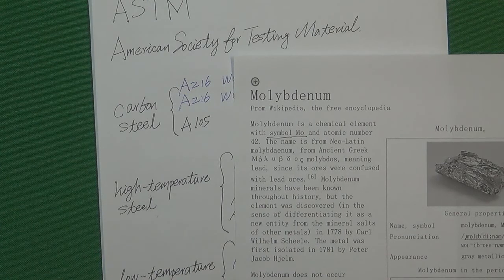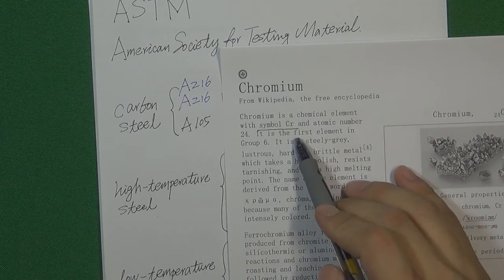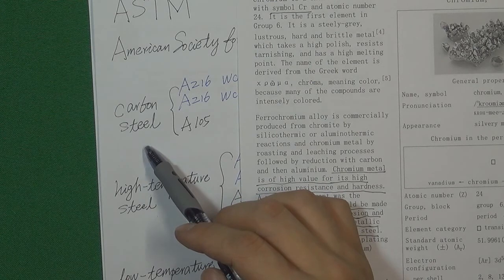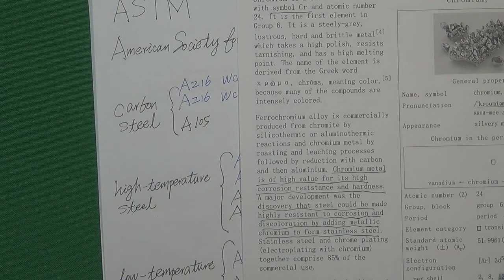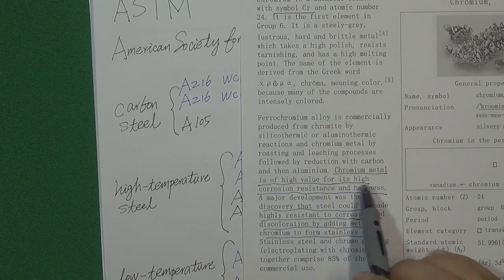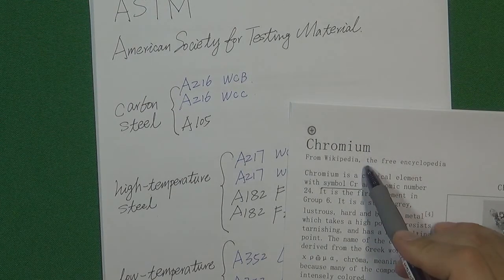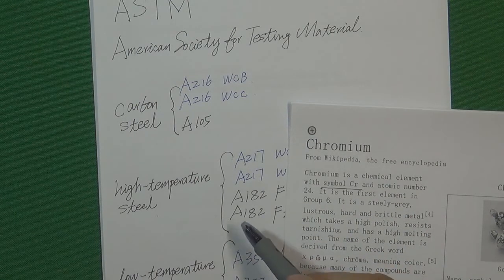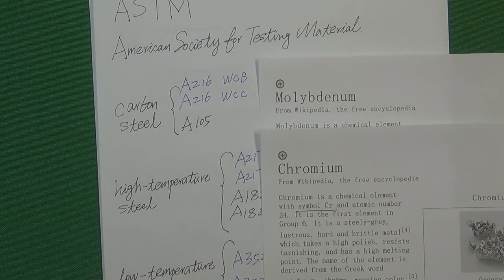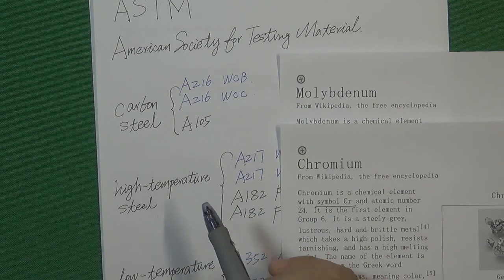Another important chemical element is chromium (symbol Cr). Chromium gives carbon steel the property of rusting much more slowly in high temperature environments. According to Wikipedia, chromium metal is valued for its high corrosion resistance and hardness. So chromium and molybdenum are the main chemical elements that protect steel from rusting and softening in high temperature environments.